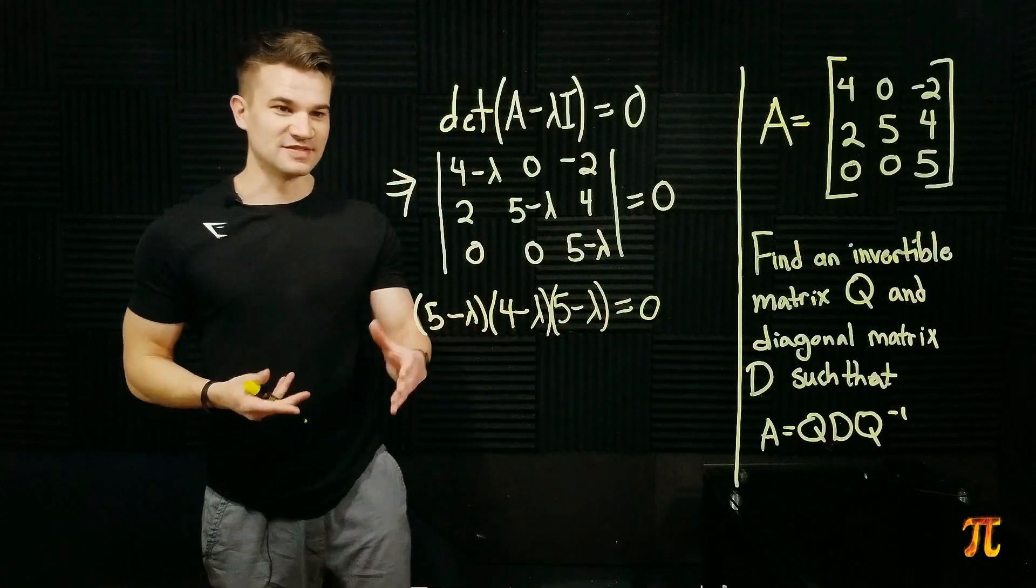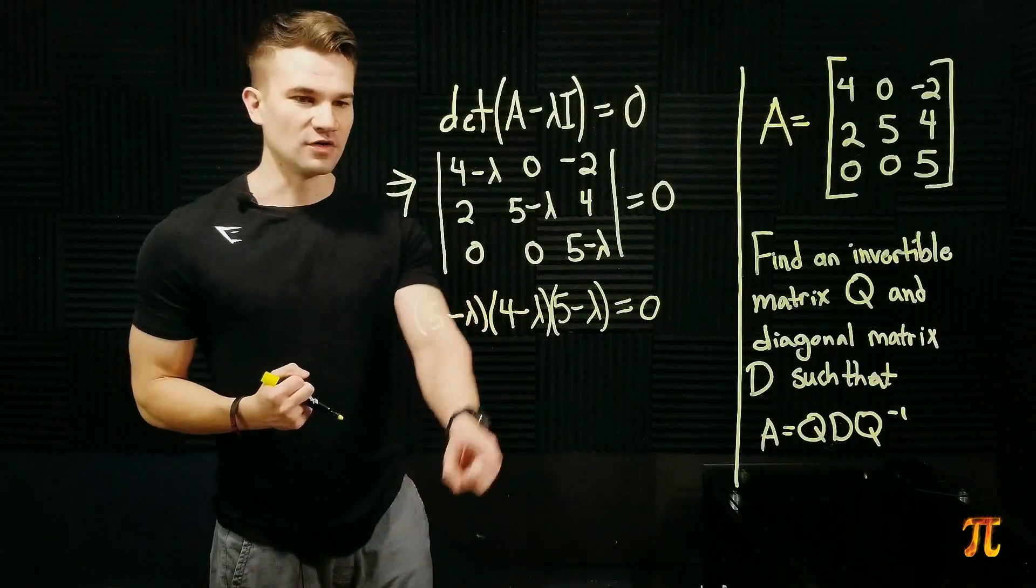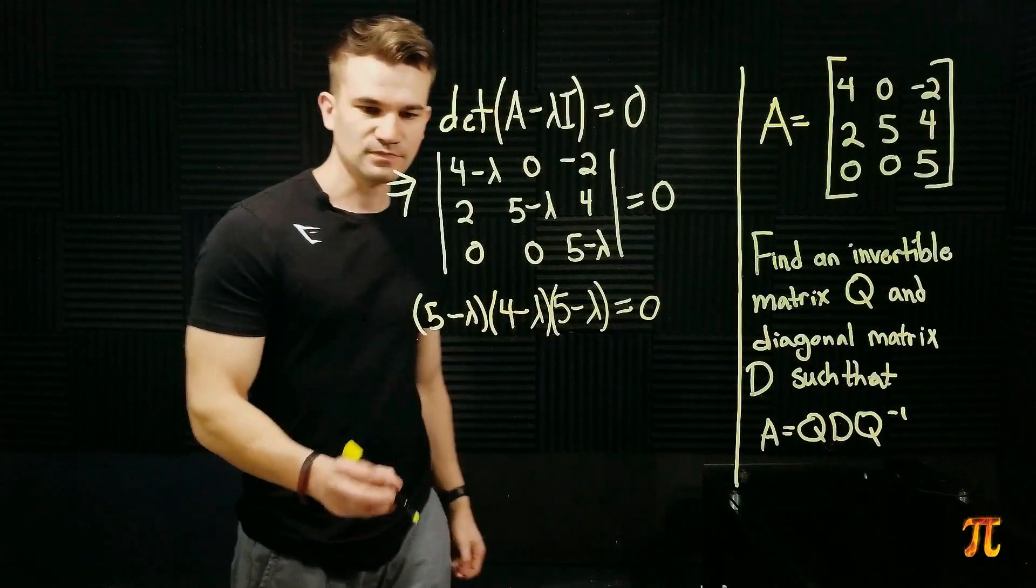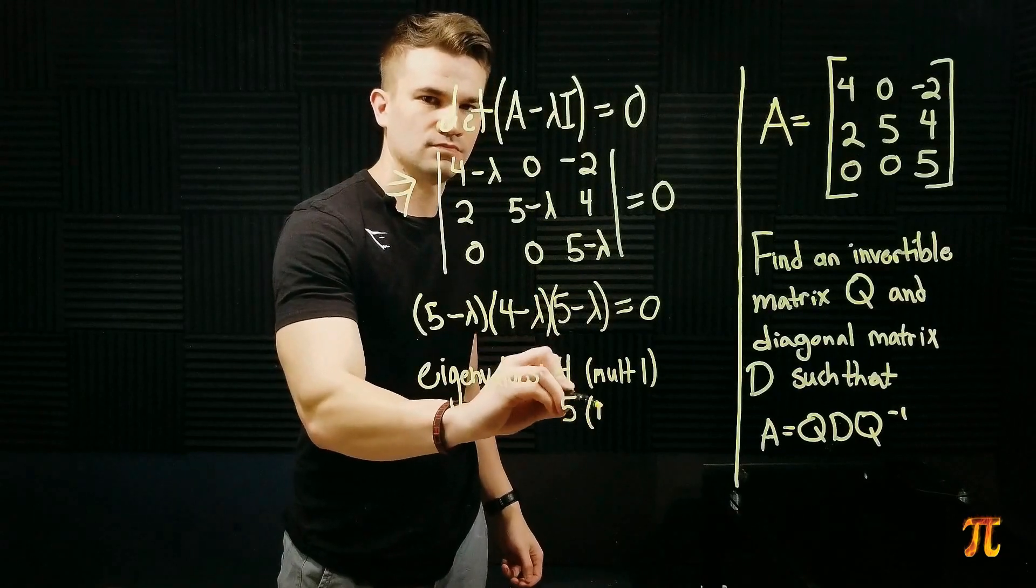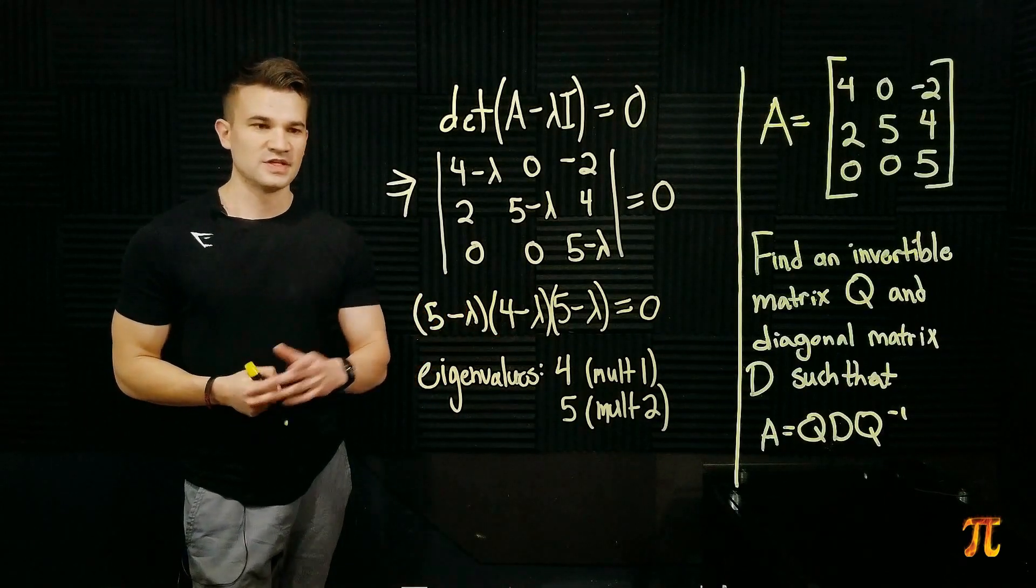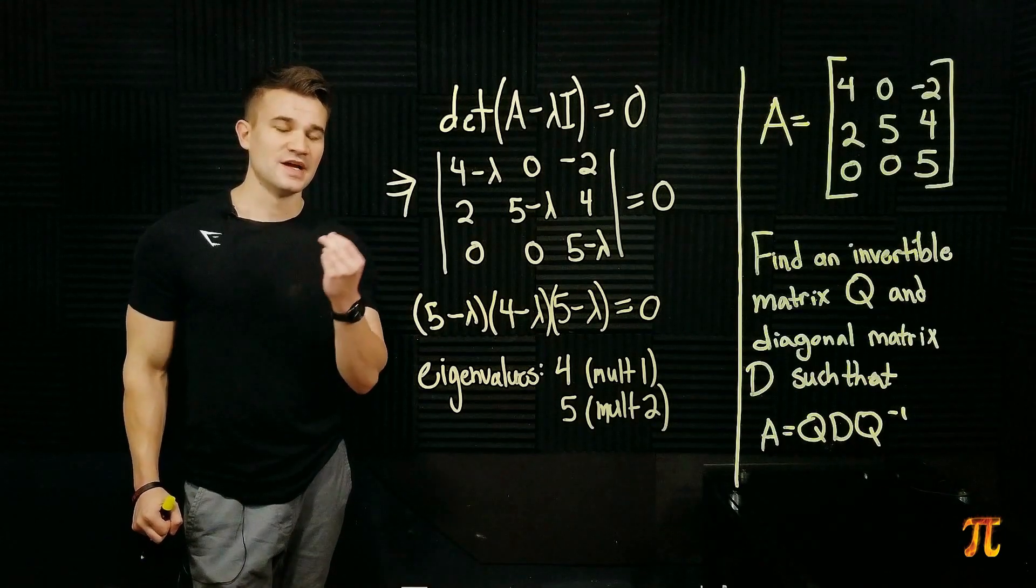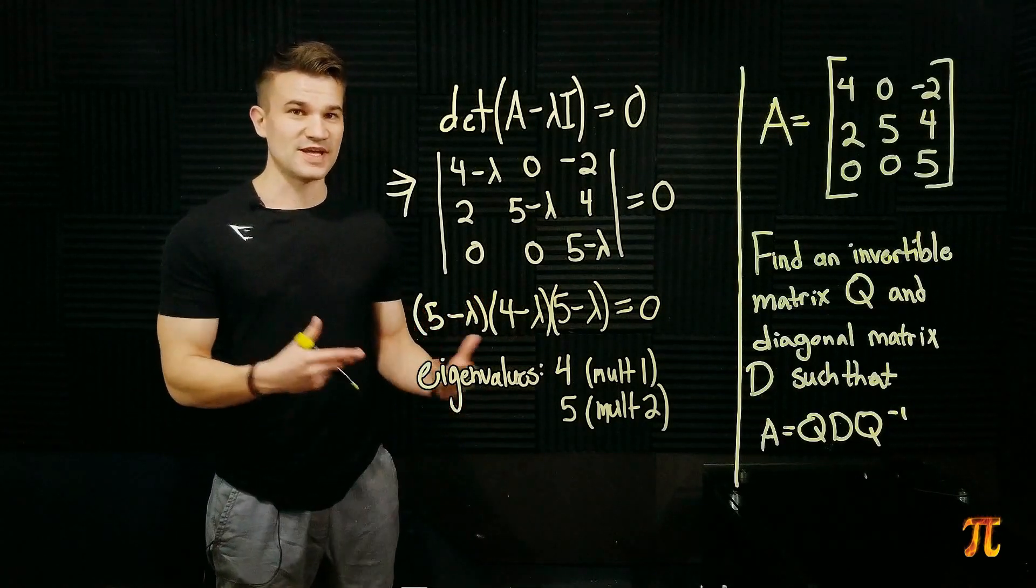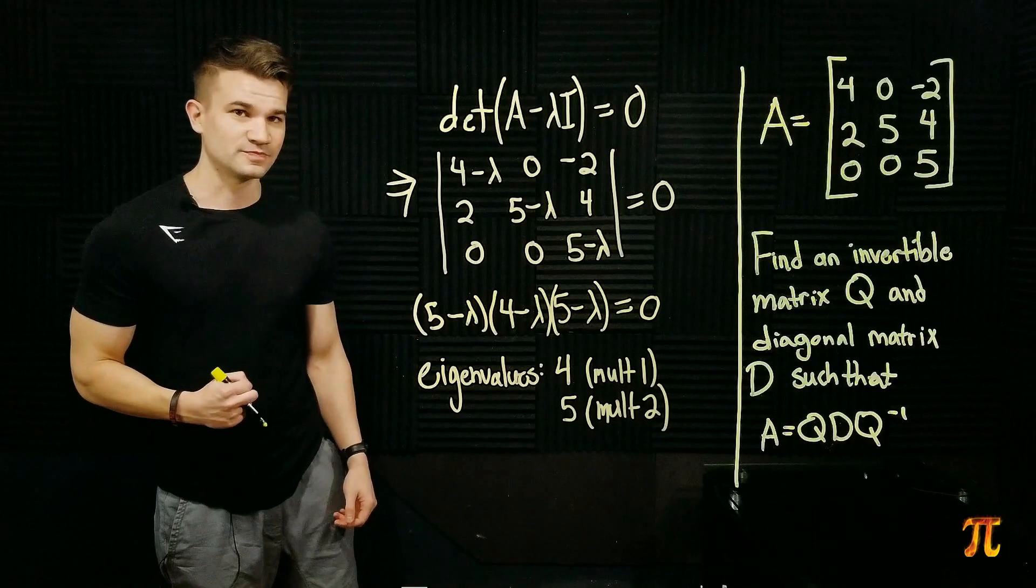And luckily for us, this cubic is already in its factored form, so we can see the eigenvalues straight away. The eigenvalues are 4 and 5, which is a multiplicity 2. It's the repeated eigenvalue. So, the next thing to do is to look for the basis of eigenvectors. Let's go ahead and handle the eigenvectors for 5 first because we need to find two linearly independent eigenvectors corresponding to 5 just to know that this matrix is diagonalizable at all.